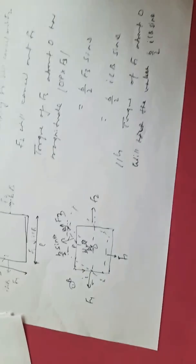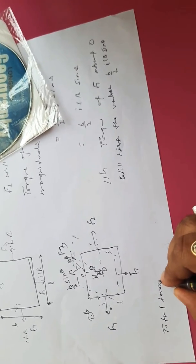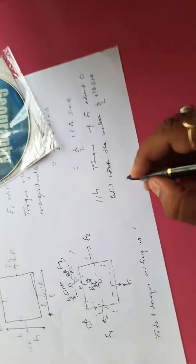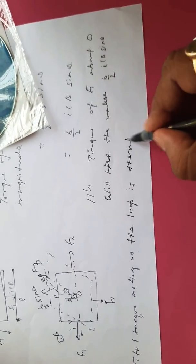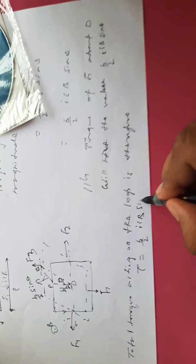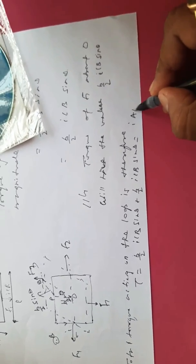So the total torque acting on the loop is therefore: τ = (B/2)ILB sinθ + (B/2)ILB sinθ, which equals IAB sinθ, where A = L × B is the area of the loop.